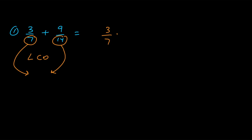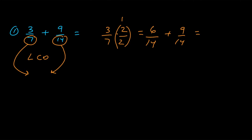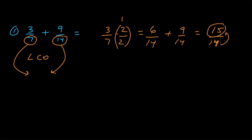In this case they both divide into fourteen evenly. So for three sevenths, if we multiply the numerator by two and the denominator by two, that's like multiplying the whole fraction by one. Three times two is six, seven times two is fourteen. Nine fourteenths already has a denominator of fourteen, so we add the numerators: six plus nine is fifteen, keeping the denominator of fourteen. Since the numerator is larger than the denominator, that's an improper fraction. Fourteen goes into fifteen one time with one left over, so the answer is one and one fourteenth.